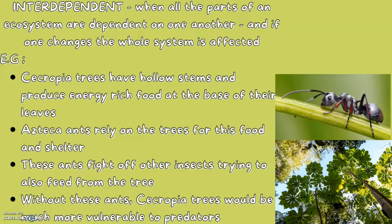Examples of this: the cecropia trees have hollow stems and produce energy-rich food at the base of their leaves. Azteca ants rely on the trees for this food and shelter. These ants fight off other insects trying to also feed from the same tree. Without these ants, cecropia trees would be much more vulnerable to other predators.